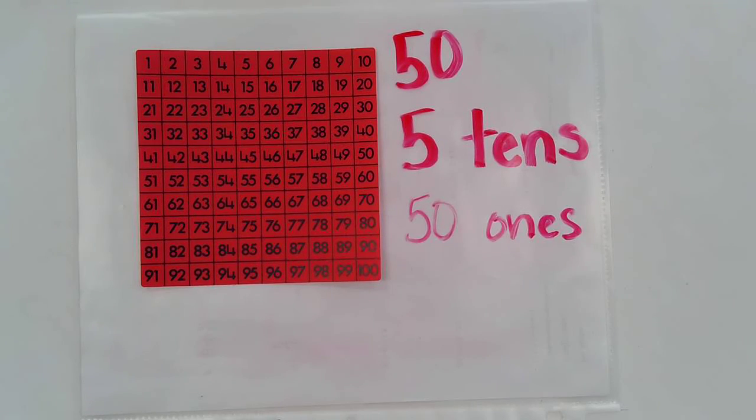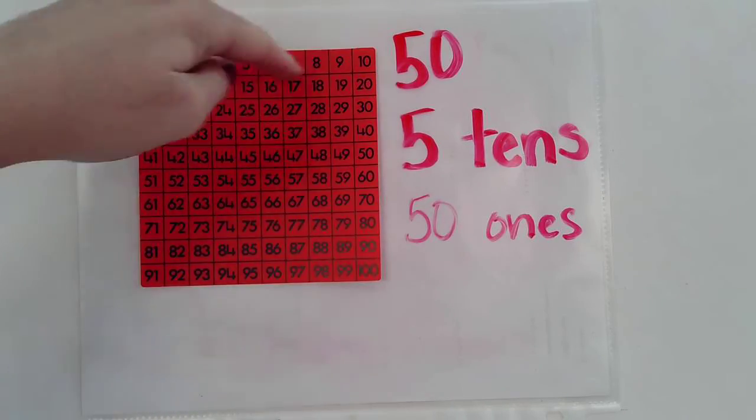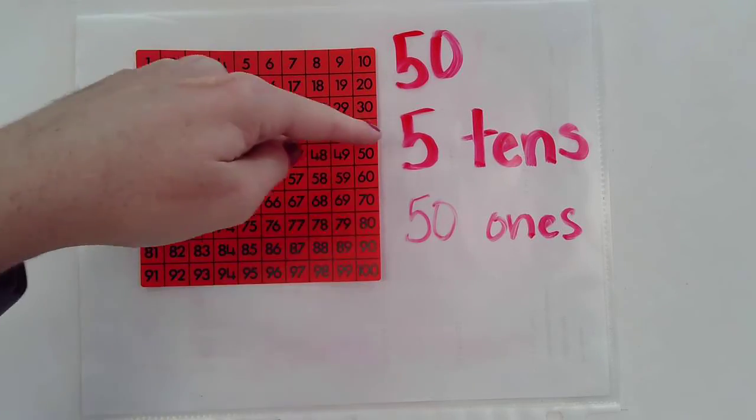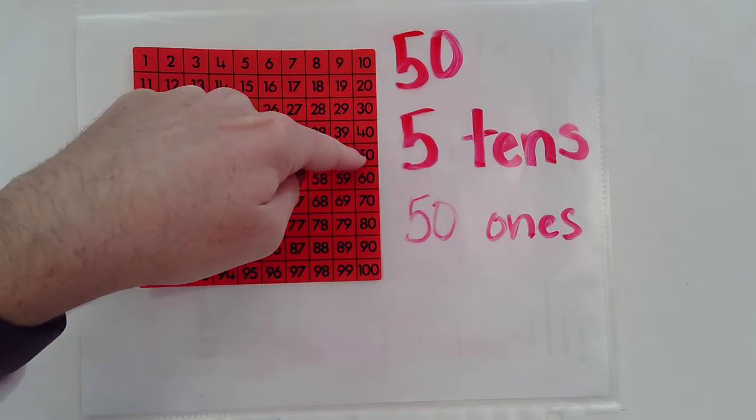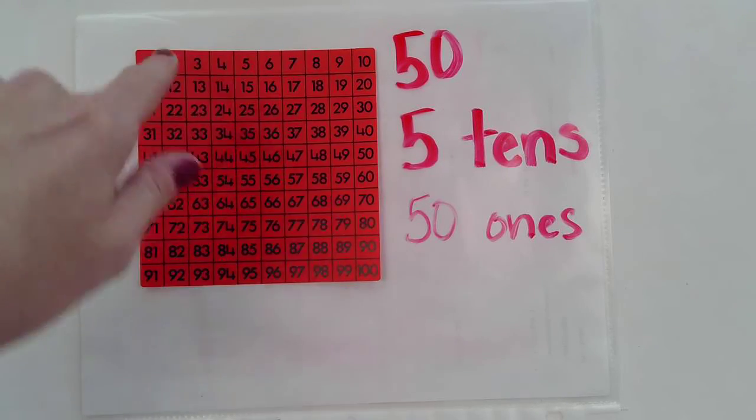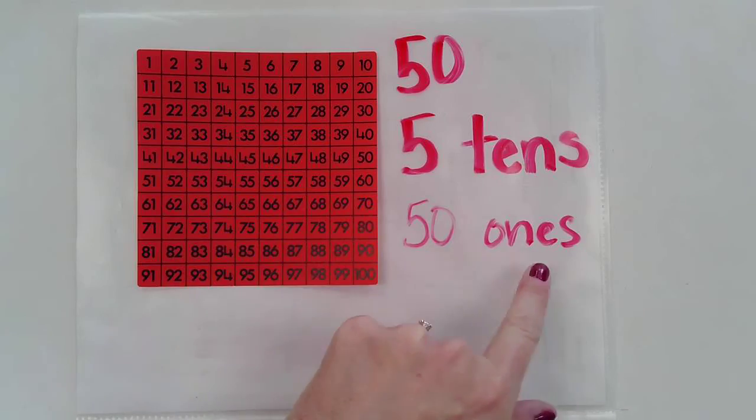Because I know that there's ten across here. So one, two, three, four, five—five tens. Or I could count each individual number and know that it's fifty ones.